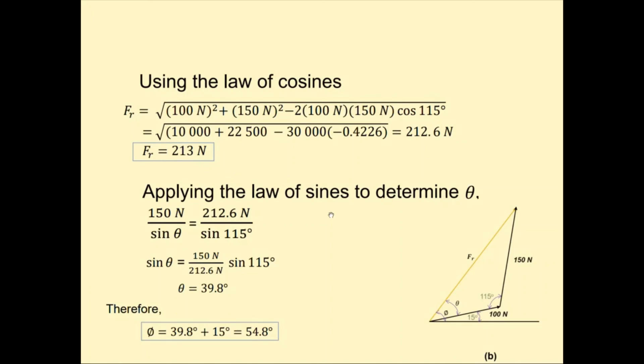Since we've obtained the value of the resultant, we can now use the sine law to determine theta. So, 212.6 N over the sine of its opposite angle, sine 115, is equal to 150 N over sine theta. The theta we get is 39.8 degrees. The value of phi is going to be theta plus 15 degrees, and its value is 54.8 degrees.